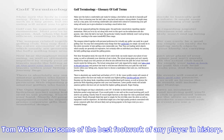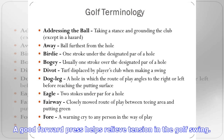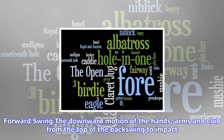Effective loft: the actual loft on a club at impact as opposed to the loft built into the club. Effective loft is determined by, among other things, the lie and the position of the hands relative to the ball at impact. The uphill lie added effective loft to the club.